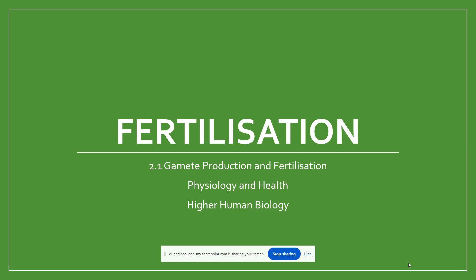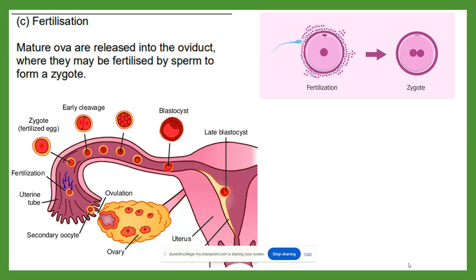Hello everyone and welcome to the final video as part of Key Area 1, Gamete Production and Fertilisation, where we'll take a look at the fertilisation process itself. Fertilisation is the combining of the ova and sperm cells from each of the reproductive systems. Mature ova cells are released from the ovary and into the oviduct or fallopian tube, and this will be your site of fertilisation.